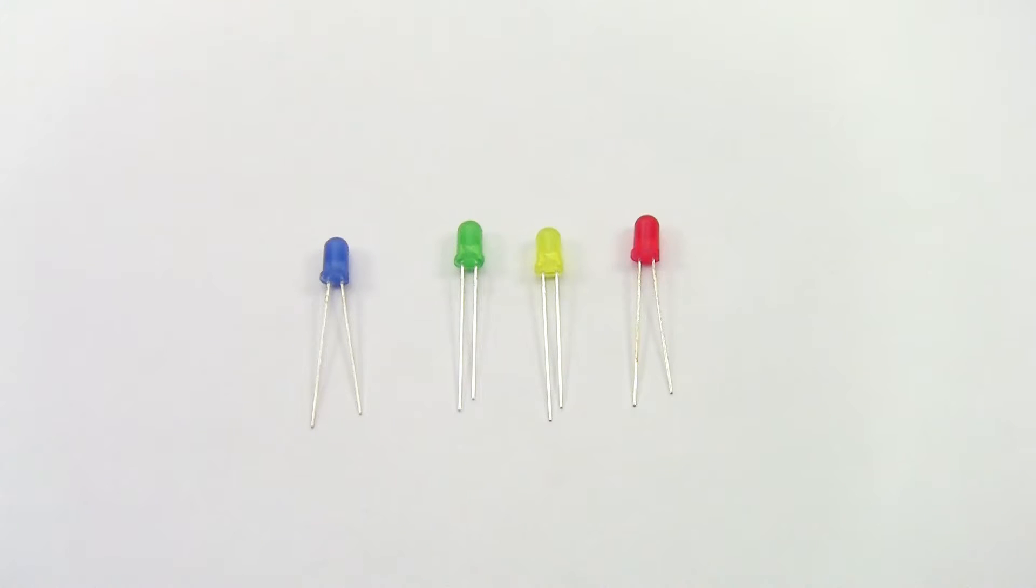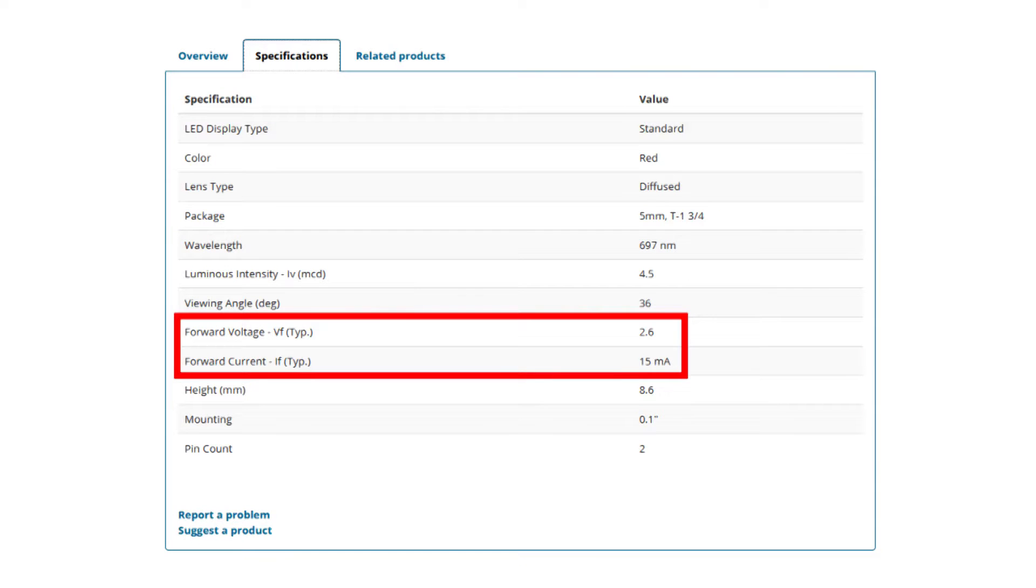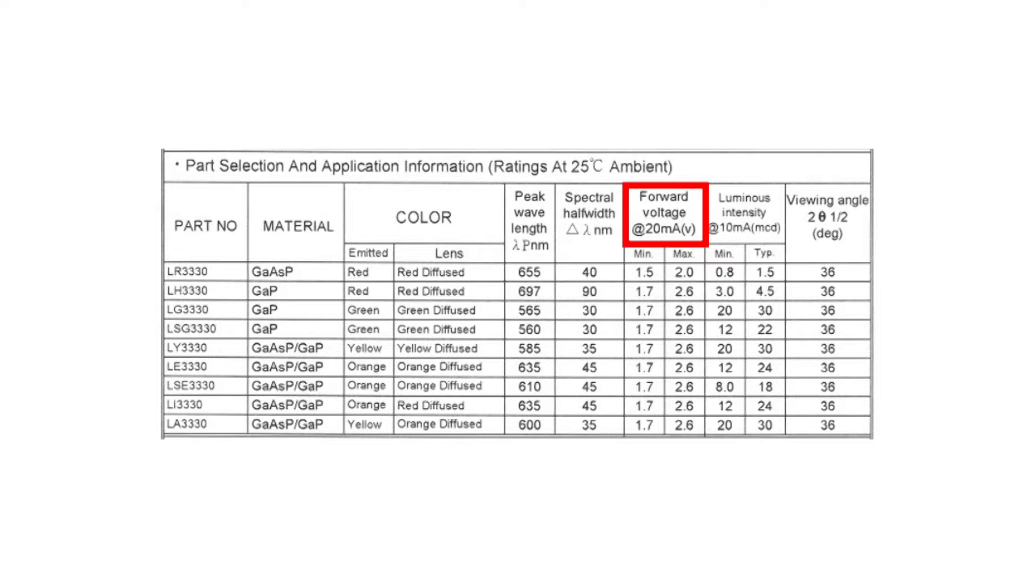Let's start with the simplest case of one LED. You'll need to look up two values for the LED you want to use: the typical forward voltage and the typical forward current. This information is usually available on the website where you bought the LED or on the datasheet.